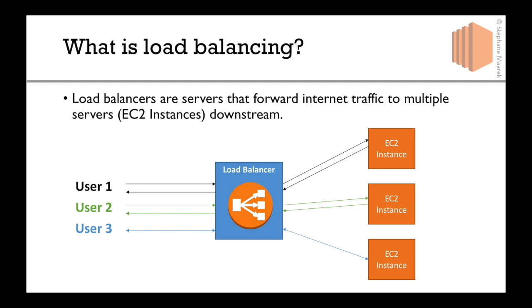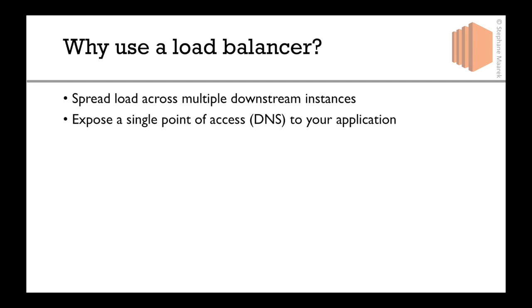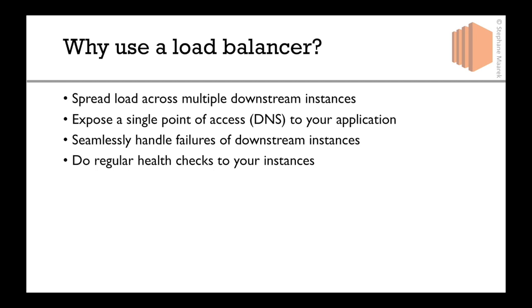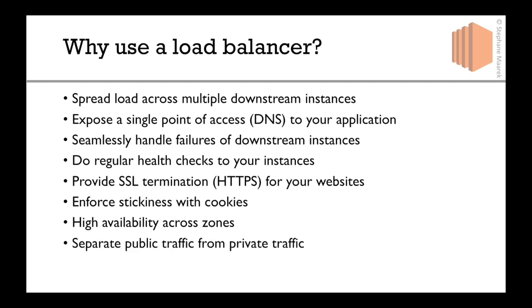The advantage of this is that now you can start scaling your application. So why would you use one? You want to spread the load across multiple downstream instances. You also want your users to only have one point of access to your application — one URL, called a DNS name. You want to seamlessly handle failures of downstream instances; if one EC2 instance crashes, you don't want the load balancer forwarding traffic to it. You want to do regular health checks to your instances so the load balancer knows which ones are healthy. You want to provide SSL termination or HTTPS for your websites at the load balancer level. You want to enforce stickiness so the same user always goes to the same EC2 instance using cookies. You want high availability across availability zones, and finally, you want to separate public traffic from private traffic.